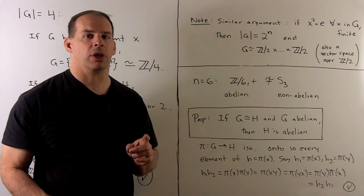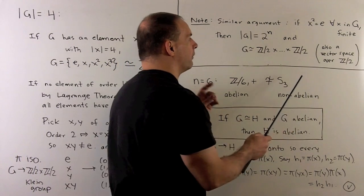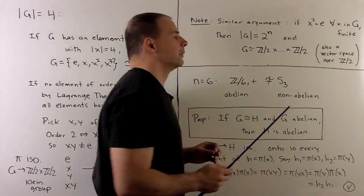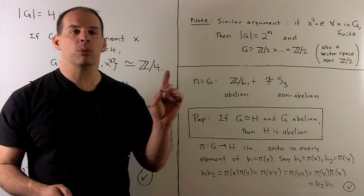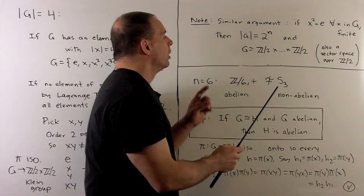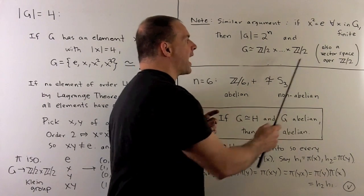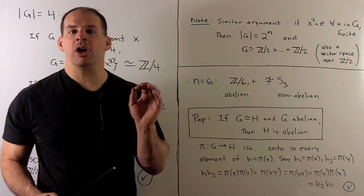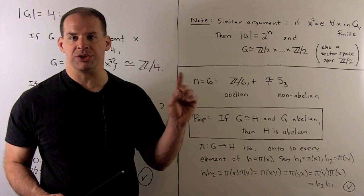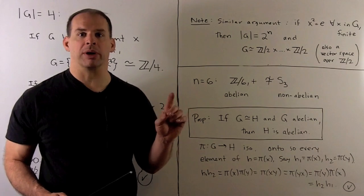Interesting side result: if we're in a finite group where every element satisfies X squared equals the identity, then G is isomorphic to a finite product of Z2's, the order of G is 2 to the n where n is the number of factors, and G also has the structure of a vector space over Z2, so G admits some interesting linear algebra.